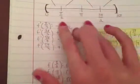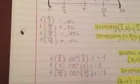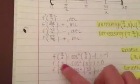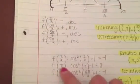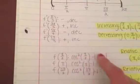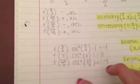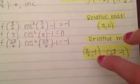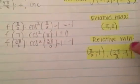Since we found the increasing and decreasing intervals, we can determine the relative maxima and minima. The domain is a closed interval, so the graph can't extend to infinity. Plugging each critical number into the original function cosine squared x minus 1, the relative maximum is at (pi, 0), and the relative minima are at (pi over 2, negative 1) and (3 pi over 2, negative 1).